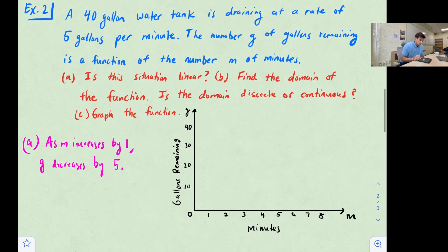Okay, so now let's talk about the domain here. Well, domain, once again, is going to be our input, which is going to be our minutes in this case. Well, before we start draining this tub, that's minute zero, we have 40 gallons in the tank. So we could say that would be like (0, 40).